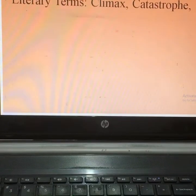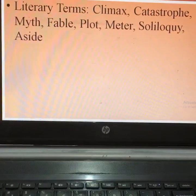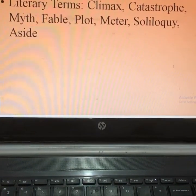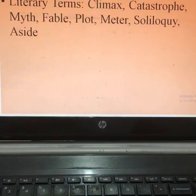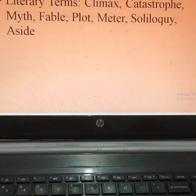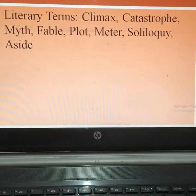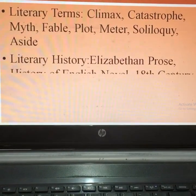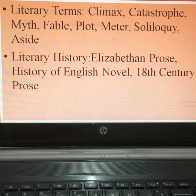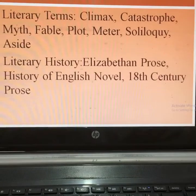Our last unit, Unit Five, like Paper First, is made up of literary terms and literary history. In literary terms we have: climax, catastrophe, myth, fable, plot, meter, soliloquy, and aside. In literary history we have Elizabethan prose, the history of the English novel, and 18th-century prose.